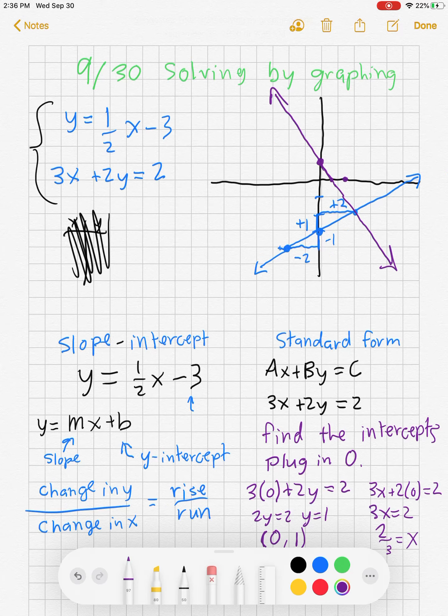So notice our lines cross at one point. There we go. That's our solution. How should we name the solution? Let's go ahead and call it two, negative two. Notice we go over two, down two to get to it. Your answer should always look like this.